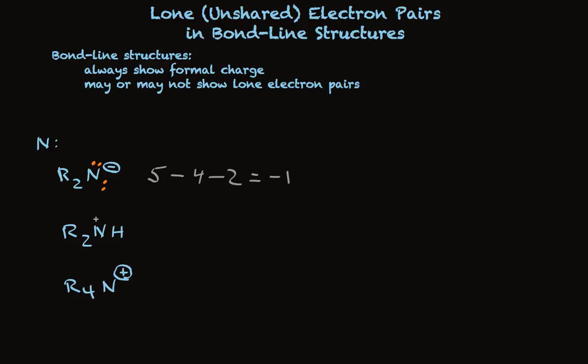So in this structure, nitrogen has one, two, three sigma bonds, that's six electrons already. It needs two more as an unshared pair. In this structure, nitrogen has four sigma bonds, one, two, four alkyl groups each, so it's two, four, six, eight. There's no more room in the valence shell, so this has no unshared pairs.